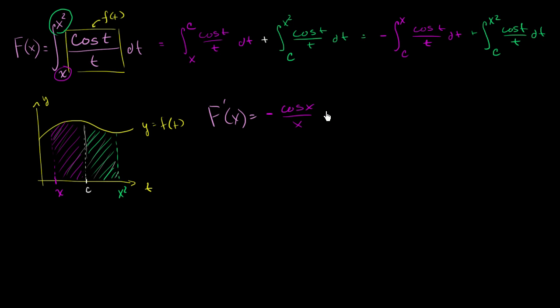And then plus, we're first going to take the derivative of this thing with respect to x squared. And that's going to give you cosine of x squared over x squared. Wherever you saw t, you replace it with an x squared. And then you're going to multiply that times the derivative of x squared with respect to x. So that's just going to be the derivative of x squared with respect to x is just 2x. And we're done.